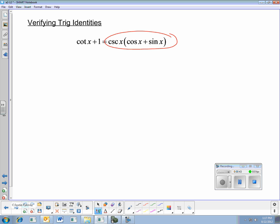And so I'm going to work with that side. I'm going to keep the left side what it is and I'm going to change or try to change the right side with identities to make it look like cotangent x plus 1.